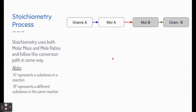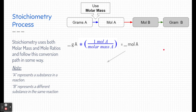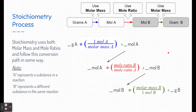This leads us back to stoichiometry. Stoichiometry uses both molar masses and mole ratios in this process. A and B here represent different chemical substances — stoichiometry compares two substances in a chemical reaction equation. Starting with grams of substance A, we use its molar mass to convert to moles of A. Then we use a mole ratio to find moles of substance B. Finally, we multiply by the molar mass of B to get grams of B. Let's apply this to an example problem.